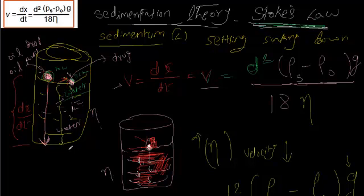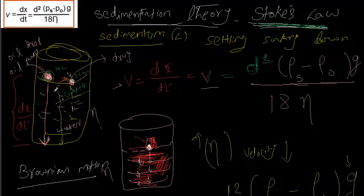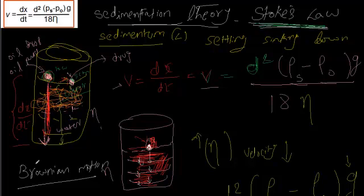Another assumption is about Brownian motion. Brownian motion is the random movement of particles when in some medium — for example, a particle moving up and down in some random motion. This is going to affect its settlement. In Stokes' law, we assume that the particle is not undergoing this random movement; it's just taking a straight path, settling straight down.